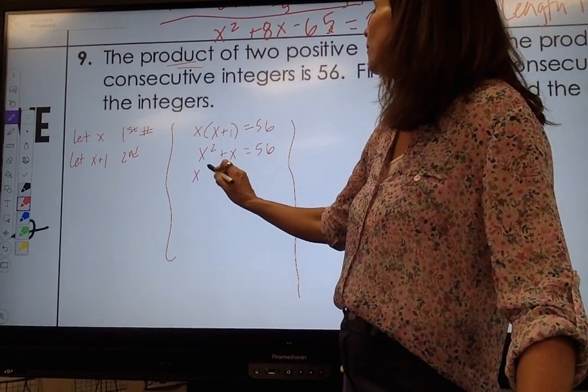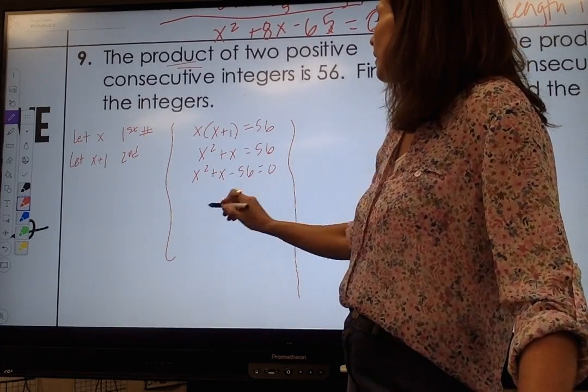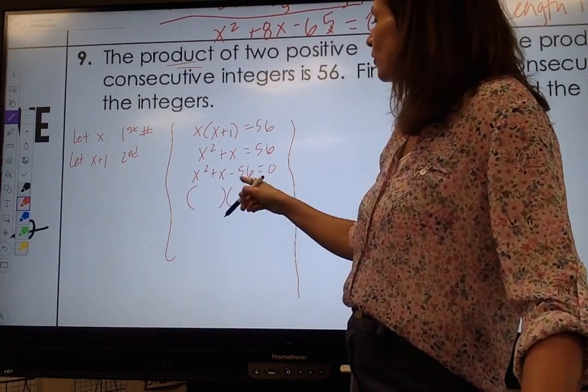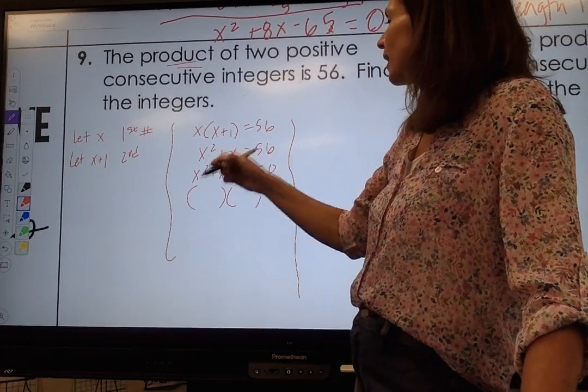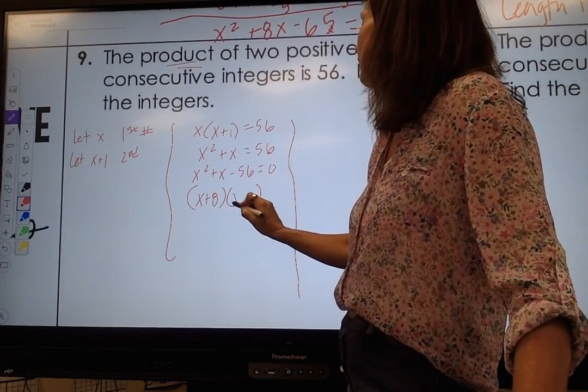So I set everything equal to 0, so I subtract 56 on both sides, and two numbers that multiply together to give me negative 56 and add together to give me 1 are going to be x plus 8 and x minus 7.